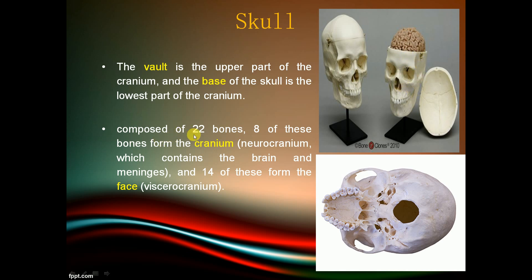The skull is composed of 22 bones: eight of these bones form the cranium, that is the neurocranium, which contains the brain and the meninges, and 14 of these form the face, that is the viscerocranium. The neurocranium is also known as the brain case.